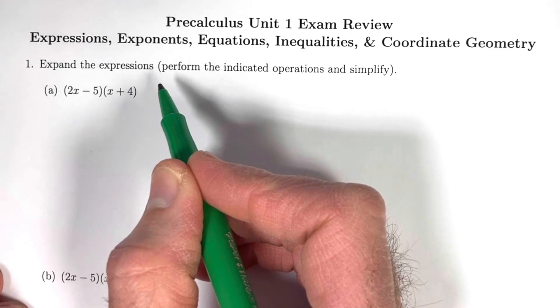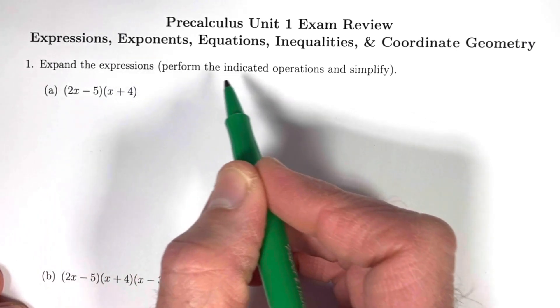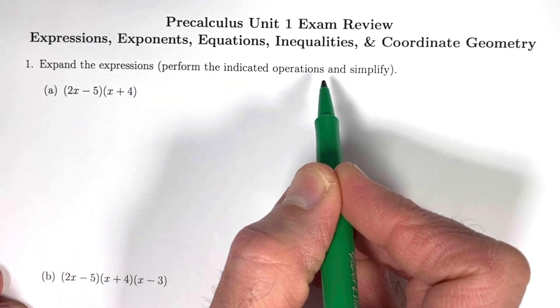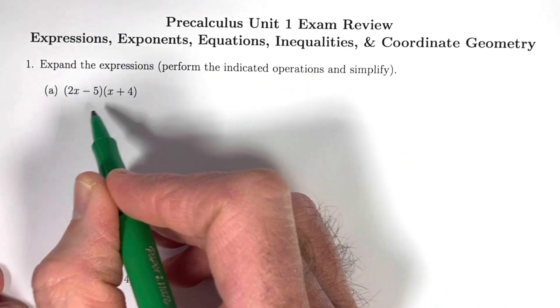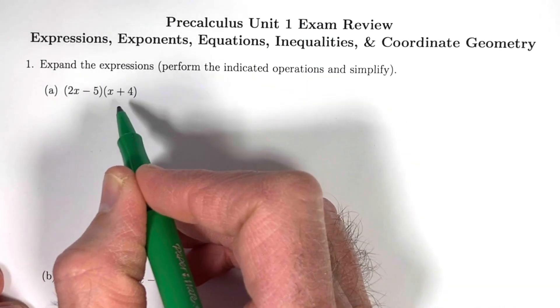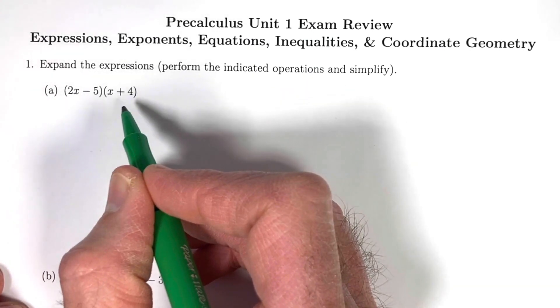Let me help you ace your pre-calculus unit 1 exam by doing a bunch of problems about expressions, exponents, equations, inequalities, and coordinate geometry. Problem number 1 says to expand the expressions, perform the indicated operations and simplify. In this case, multiply binomials and then combine like terms.